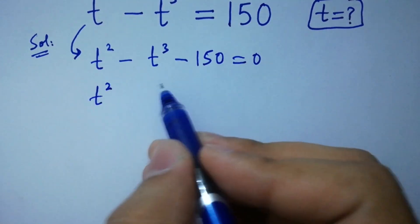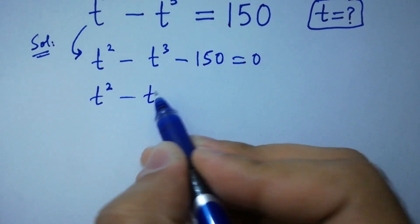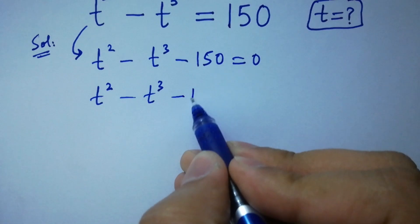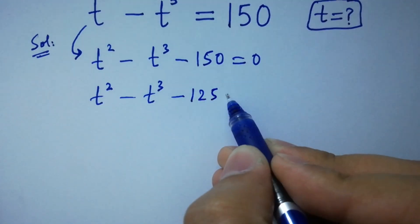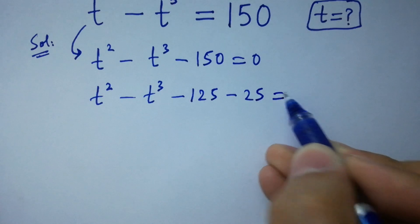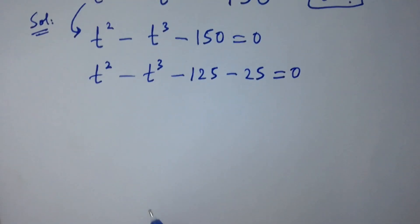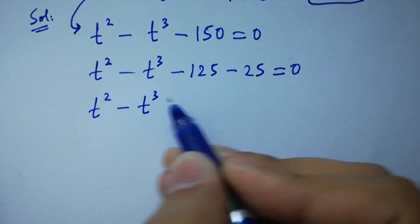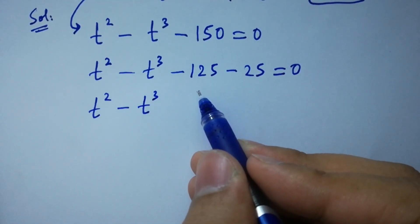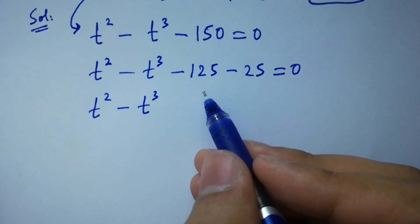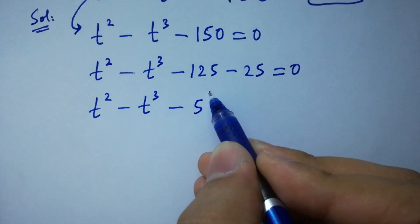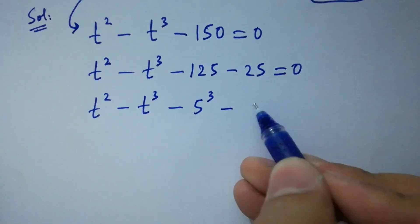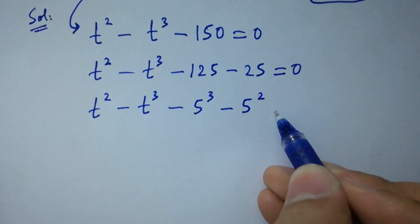By corresponding, minus 150 is the same as minus 125 minus 25, equal to 0. So we have t squared minus t cubed minus 125, where minus 125 is the same as minus 5 cubed, and minus 25 is the same as minus 5 squared, equal to 0.